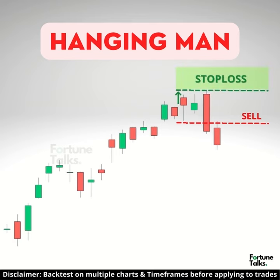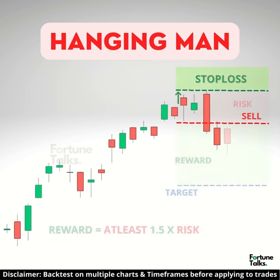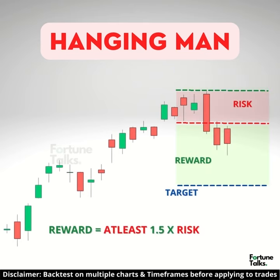The stop loss can be placed above the high of the candlestick pattern. The reward can be set at least 1.5 times the minimum risk taken.